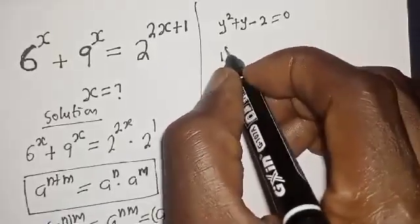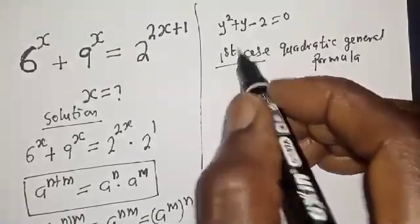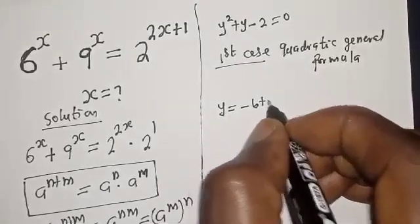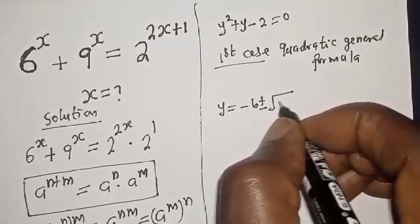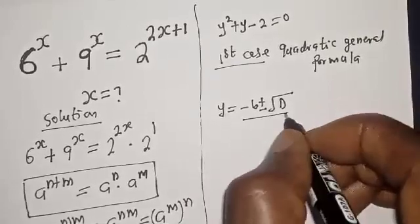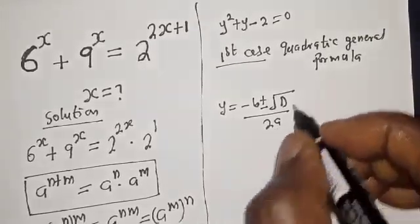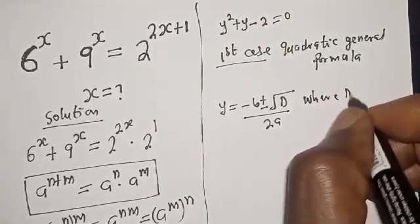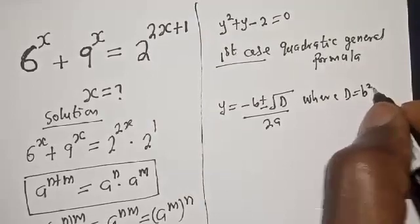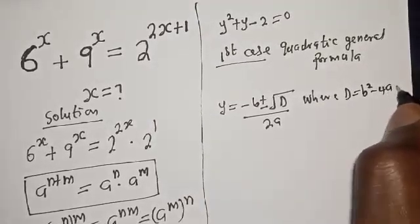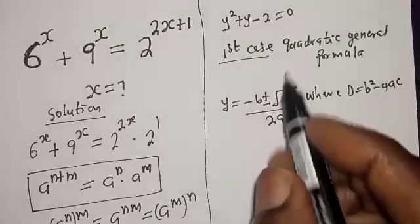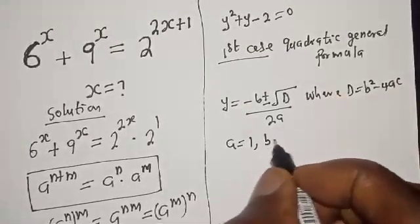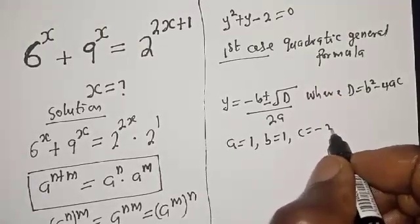This is a quadratic equation which can be solved using either factorization method or the quadratic general formula. Let's consider the first case. The quadratic general formula is y equals negative b plus or minus square root of the discriminant over 2a, where d equals b squared minus 4ac. From this equation, a equals 1, b equals 1, c equals negative 2.